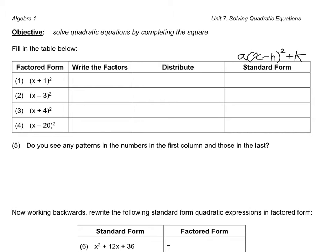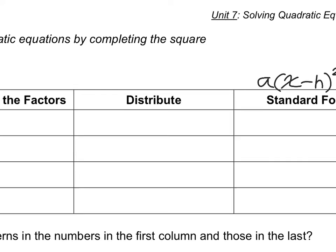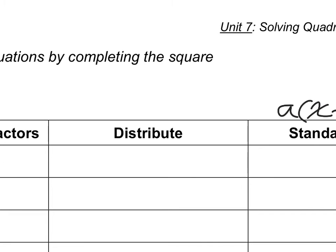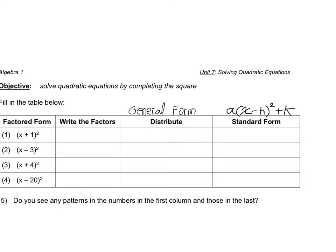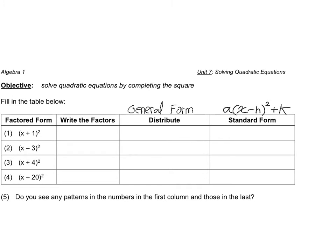Our final answer needs to look like that. We're going to just kind of build into that. The distributed form is going to give us what's known as the general form. The whole idea behind this is to see if we could determine if there's a relationship between those two forms — the general form and the standard form.